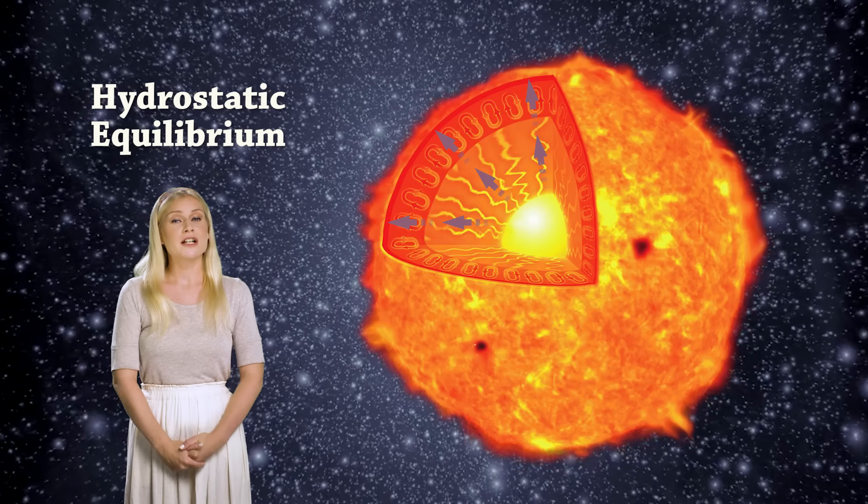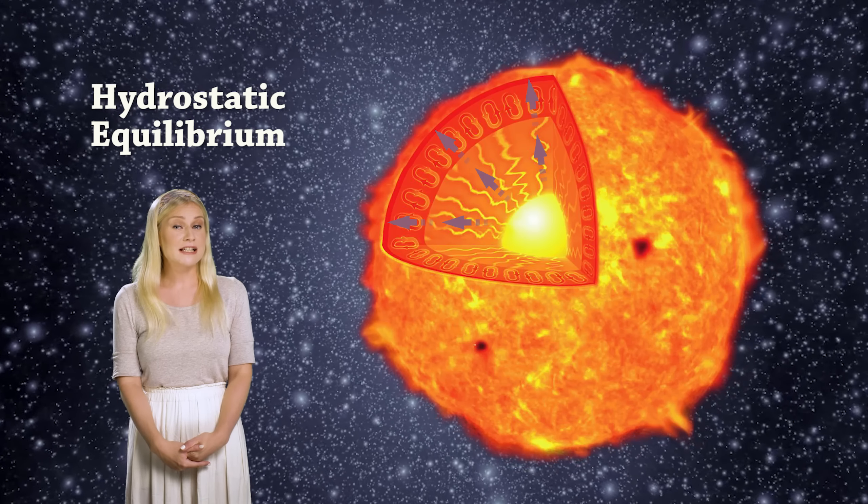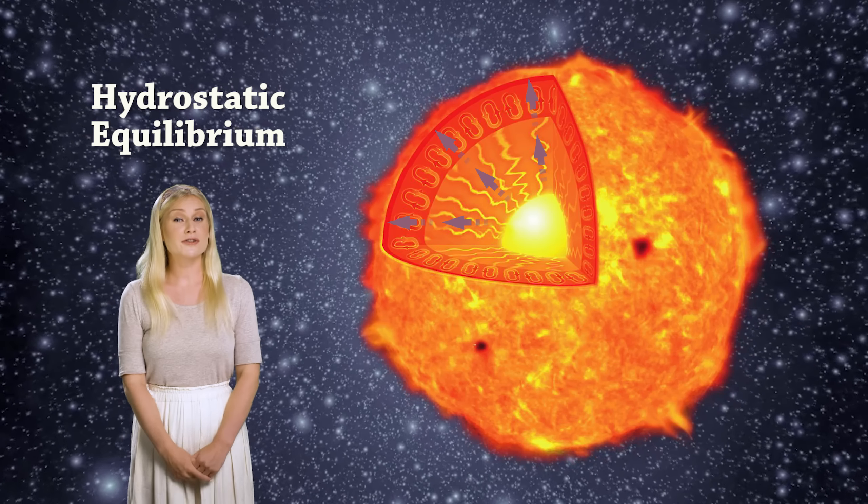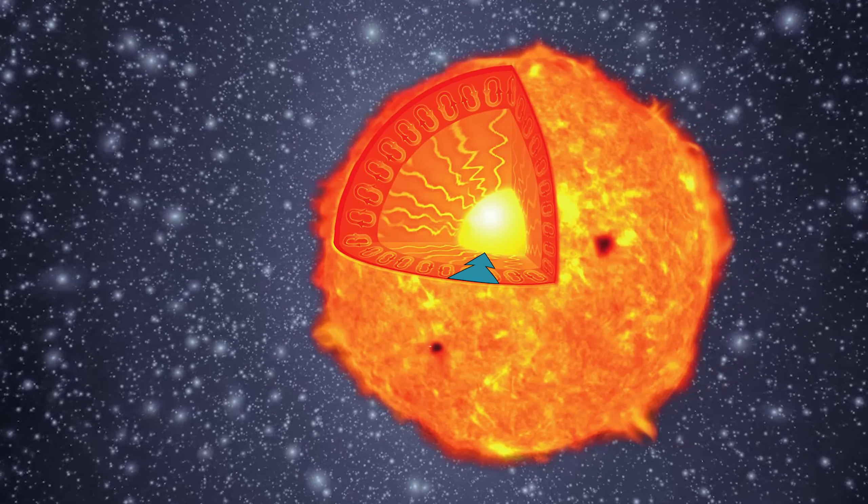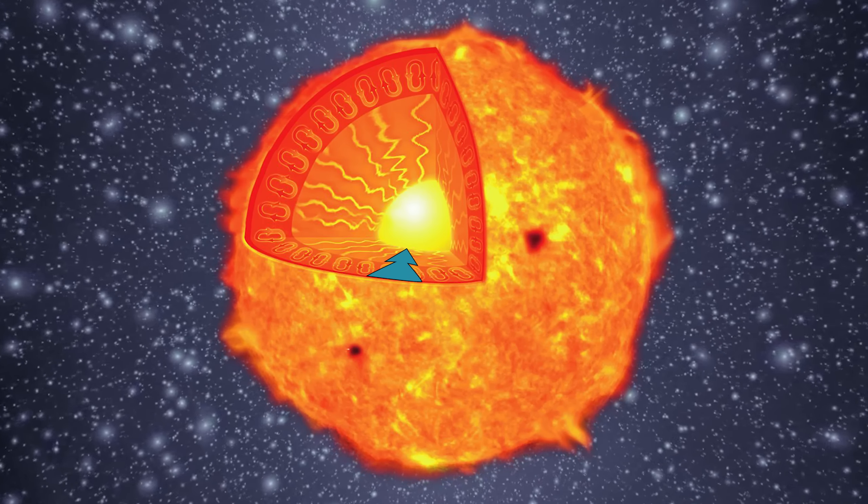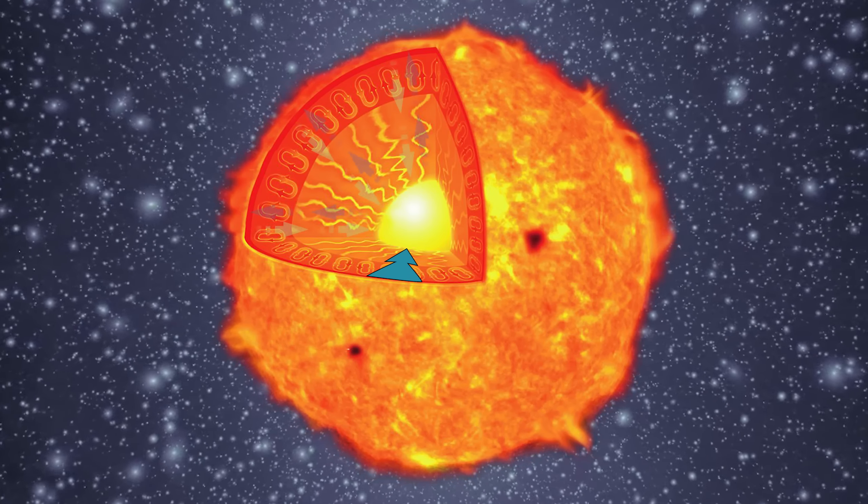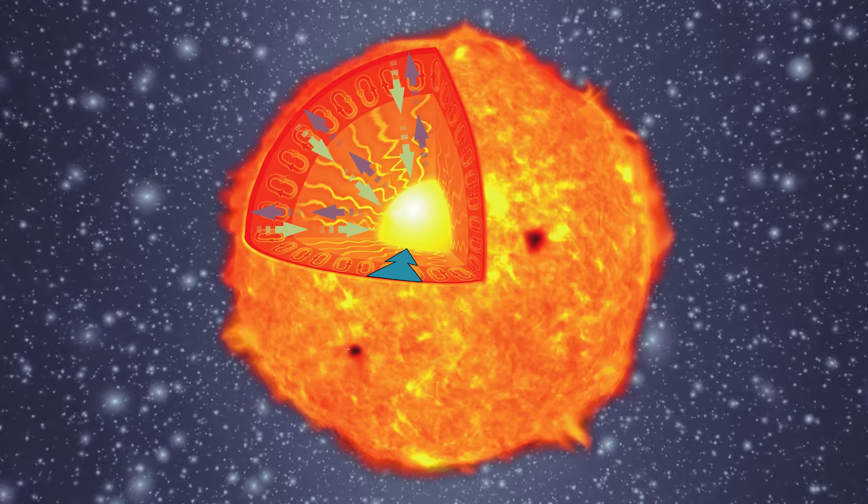This outward pressure comes from both particles moving around in the giant gas ball but also from the ongoing fusion within the stellar core. The more massive the star is, the more efficiently fusion needs to happen in its core to balance the force of gravity pushing inward.